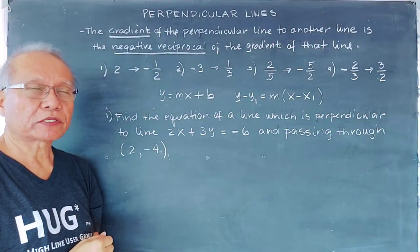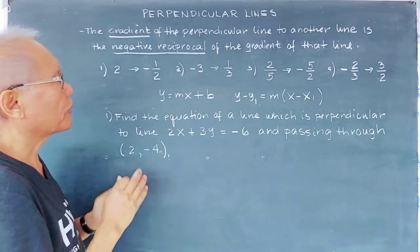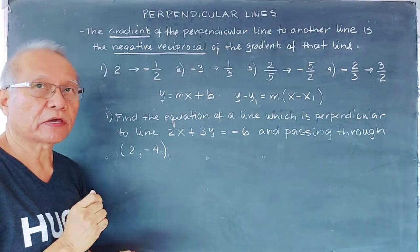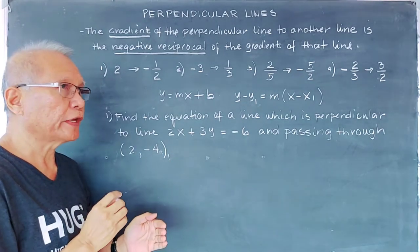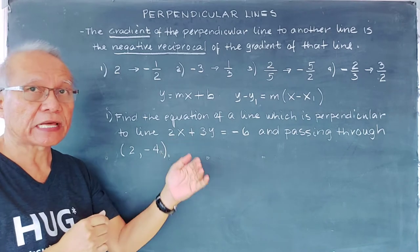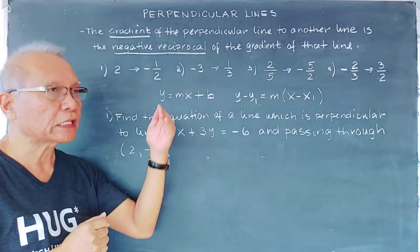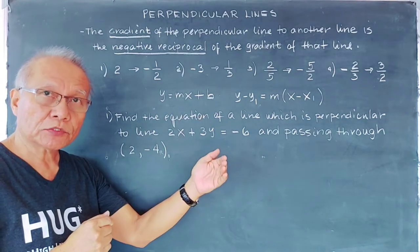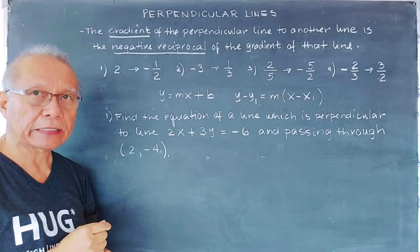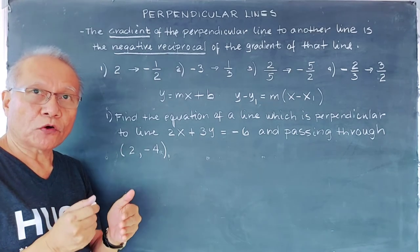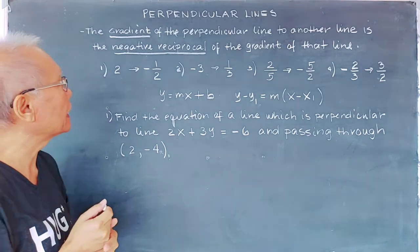Good day, learners. Today our topic is about perpendicular lines. For perpendicular lines, we are given the equation of the second line, or we have the graph of the second line, and we will determine first the gradient or slope of that line, and we will use the negative reciprocal of the slope of that line to form the linear equation of the first perpendicular line.